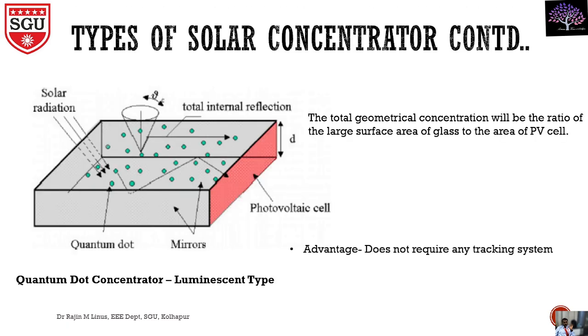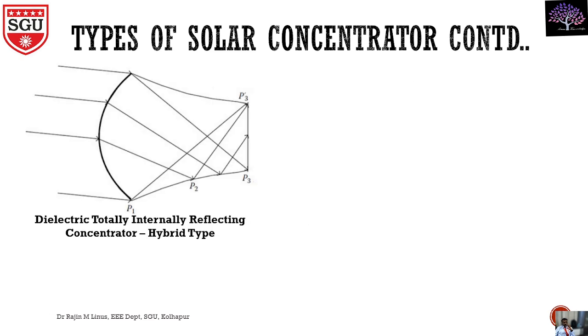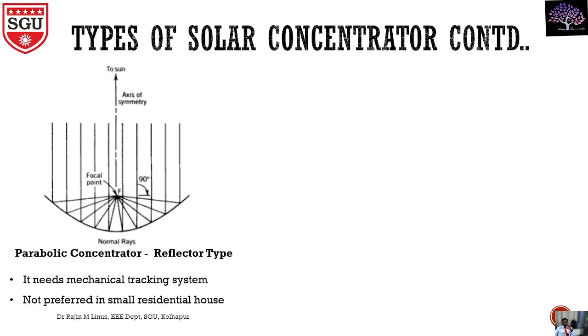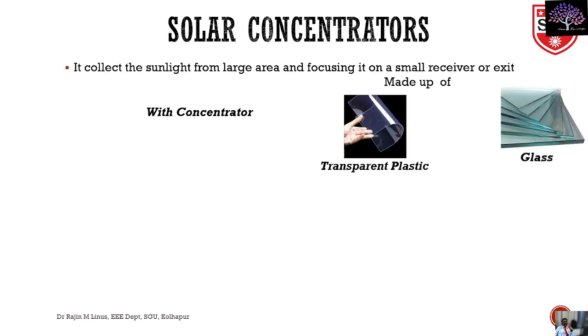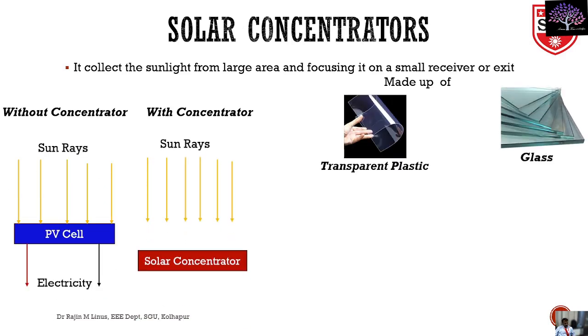So these are all the different types of concentrators. I hope you understood the different types and their advantages and disadvantages — reflection type, refraction type, and hybrid type. I hope this topic was understandable. Please subscribe to this channel. In the next class, we are going to learn about the PV cell — how it works and how the operation will be. Wish you all the best. Thank you.